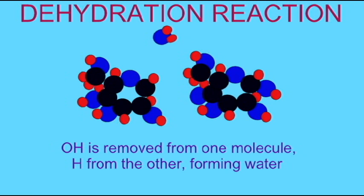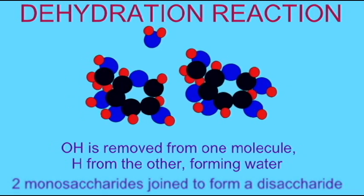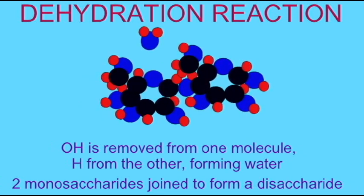If this occurs in two monosaccharides, they then form sticky ends where the OH and H were removed. These sticky ends can then be joined to form a disaccharide. So a dehydration reaction can unite two monosaccharides to form a disaccharide.